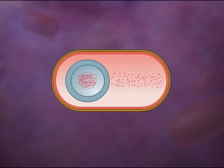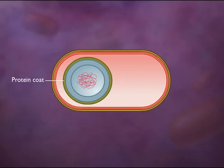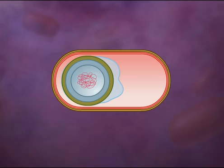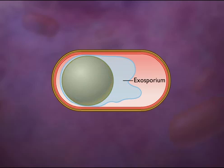A protein coat forms exterior to the cortex, and the spore becomes mature. Some spores form an additional layer called the exosporium. A mature spore is resistant to environmental conditions.